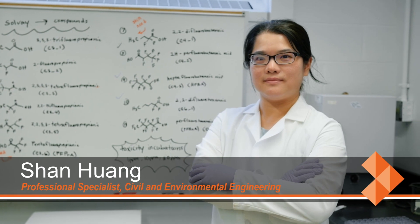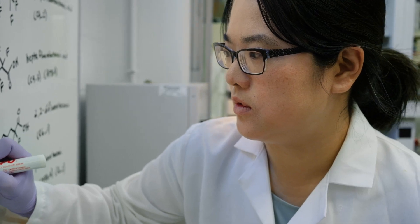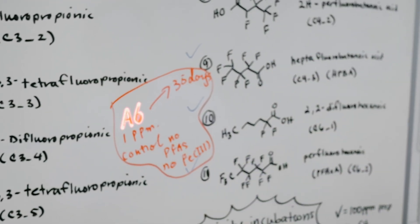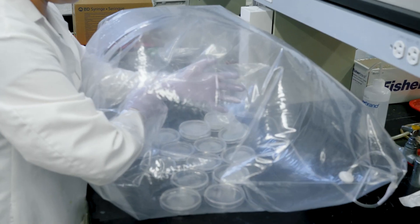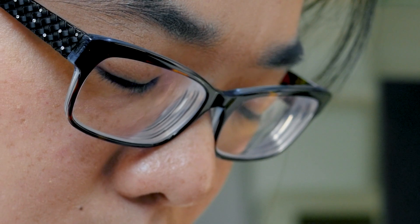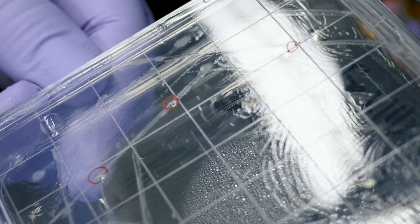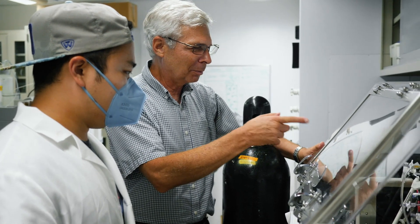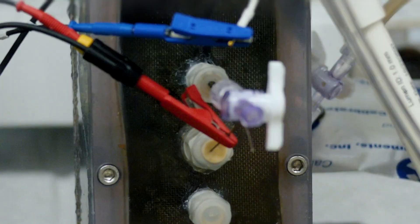My team has discovered a bacterium called Acidimicrobium A6 that is capable of breaking down this bond and biodegrading these harmful chemicals. A big challenge, however, is that these bacteria are very slow growing and we are currently looking at ways that we could speed up this production, for which we are developing novel bioelectrochemical reactors and novel means of supplying required nutrients.